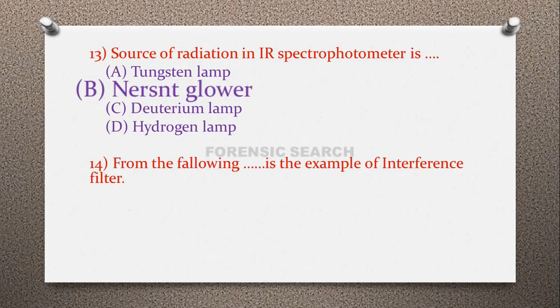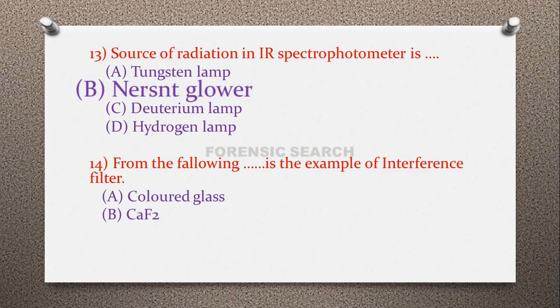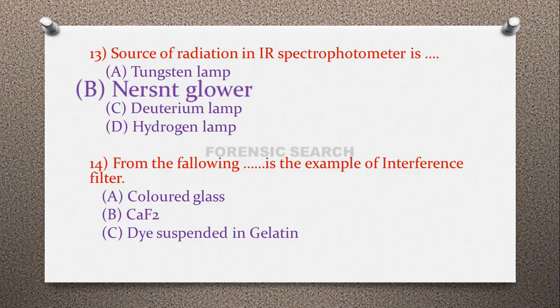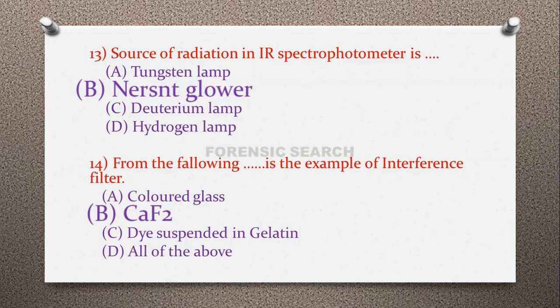Question 14: From the following, which is an example of an interference filter? Option A: color glass, option B: CaF₂, option C: dye suspended in gelatin, option D: all of the above. The correct answer is option B — CaF₂ is used as an interference filter.